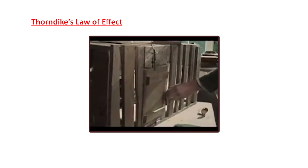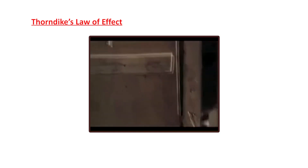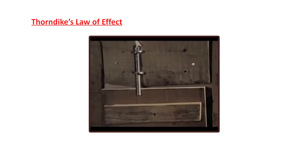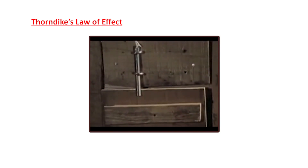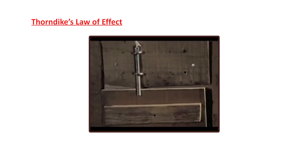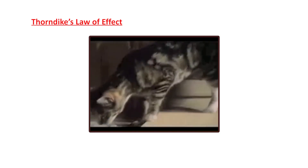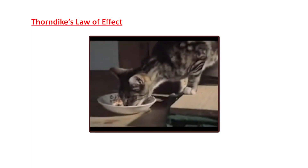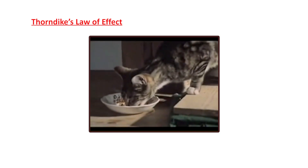After returning to the box, the cat continued with the same sort of random movements until it stepped on the treadle again. After certain succeeding trials, the cat's random movements declined and it could finally come out of the box on the first attempt itself. The behavior had become voluntary, as it was influenced by a reinforcer — the fish.